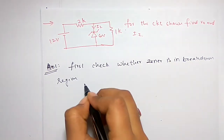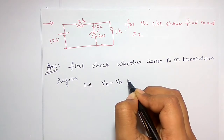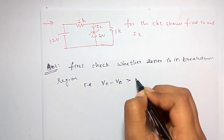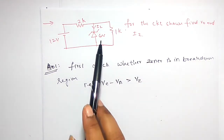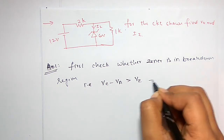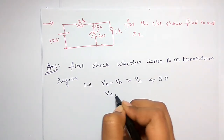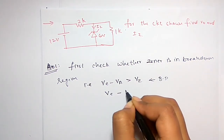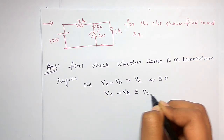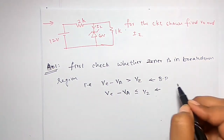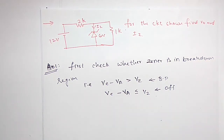To check: cathode voltage minus anode voltage should be greater than Vz, which is 6 volts given. Then it will be in breakdown condition. If cathode voltage minus anode voltage is less than or equal to Vz, then it will be off — it does not operate in breakdown region.